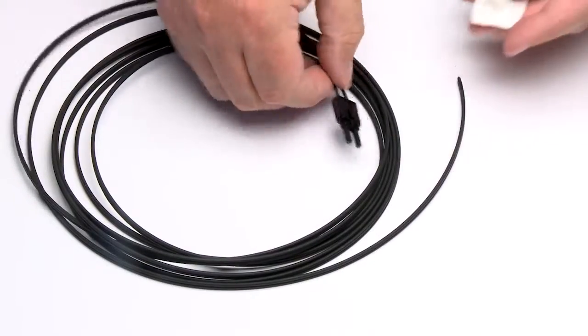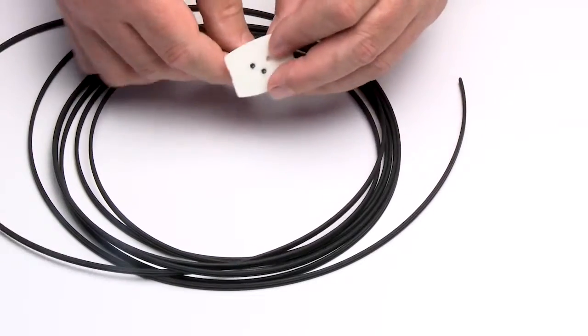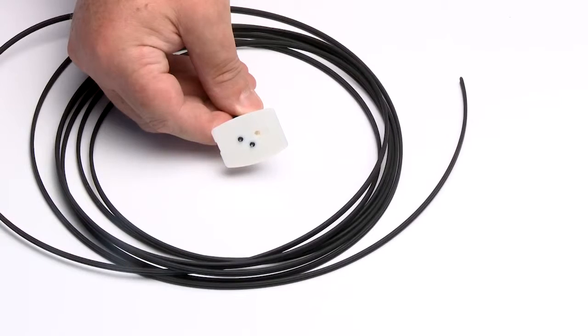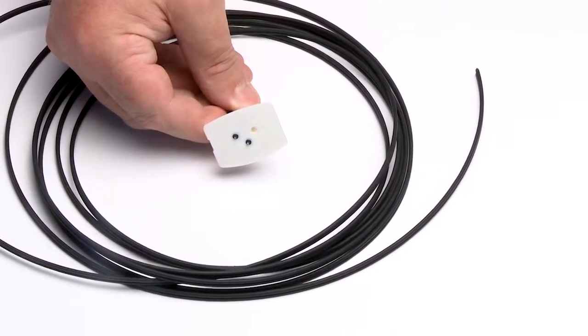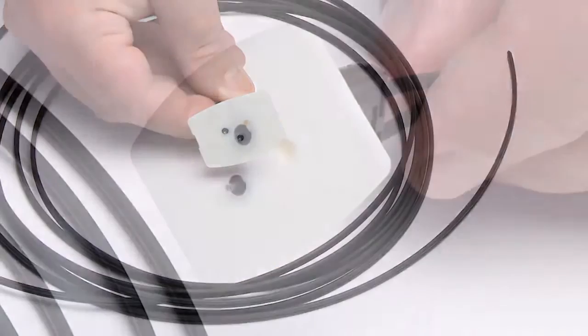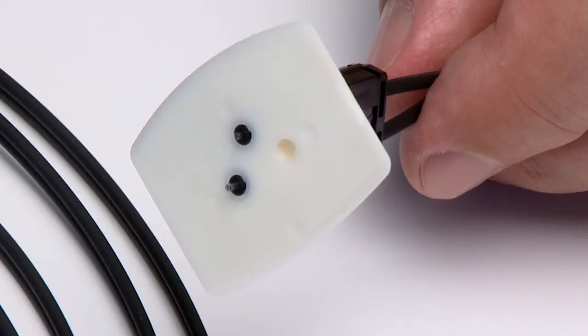Insert the connector fully into the polishing fixture with the trimmed fiber protruding from the bottom of the fixture. This plastic polishing fixture can be used to polish one or two simplex connectors or one duplex connector. Note, the four dots in the bottom of the polishing fixture are wear indicators. Replace the polishing fixture when any dot is no longer visible.